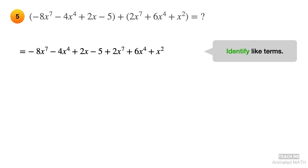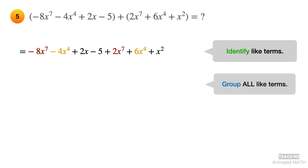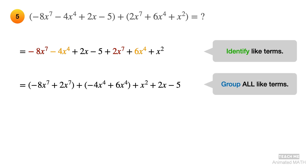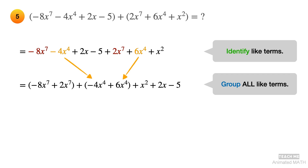Identify like terms. Terms with x raised to 7 are colored red. Terms with x raised to 4 are colored yellow. Next, group all like terms and arrange them in standard form. Group the terms with x raised to 7. Group the terms with x raised to 4.